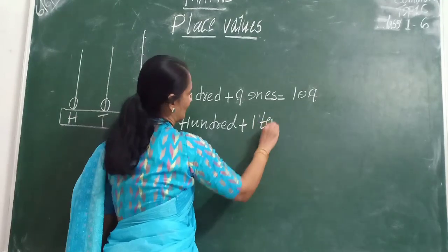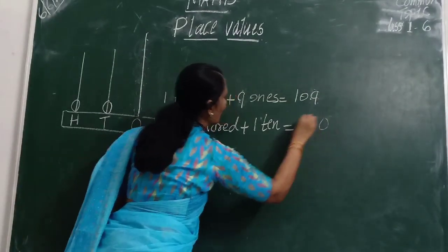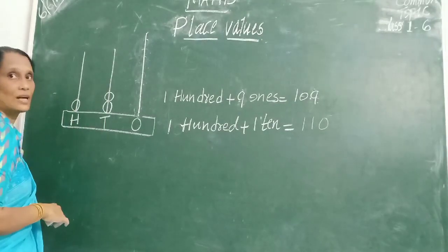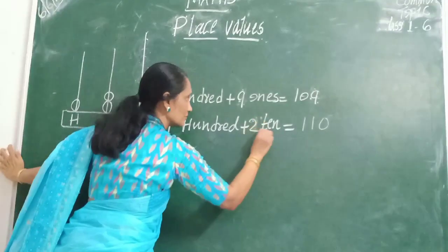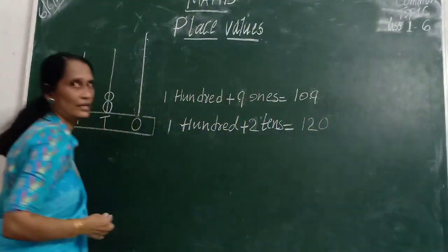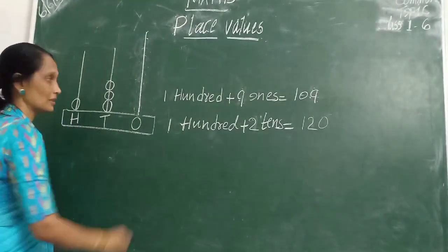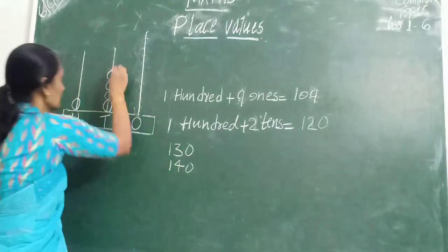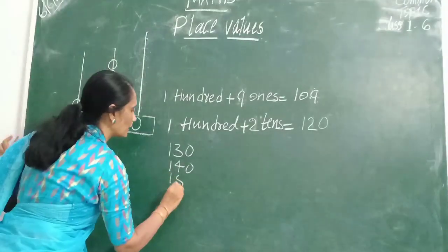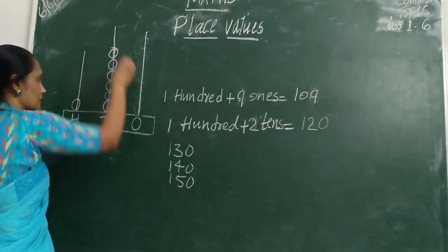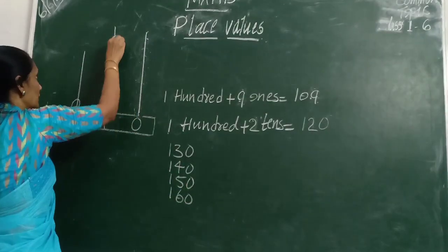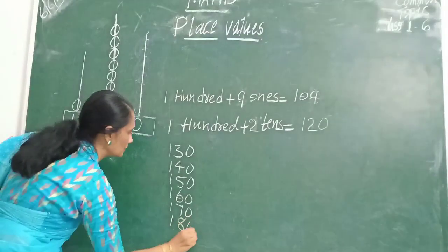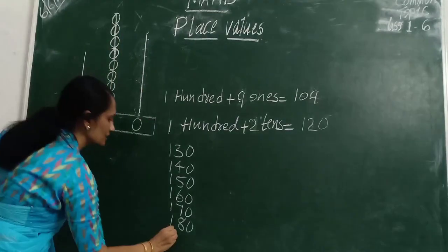If it is 100 and 2 tens, it will become 120. If it is 3 tens, 130. If it is 4 tens, 140. If it is 5 tens, 150. 6 tens, 160. 7 tens, 170. 8 tens, 180. 9 tens, 190. So 10s will come up to 9.